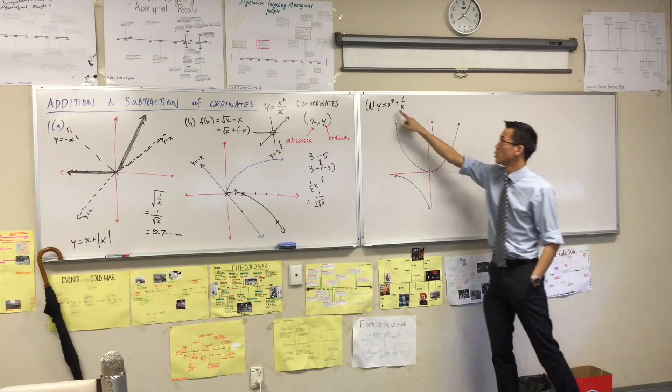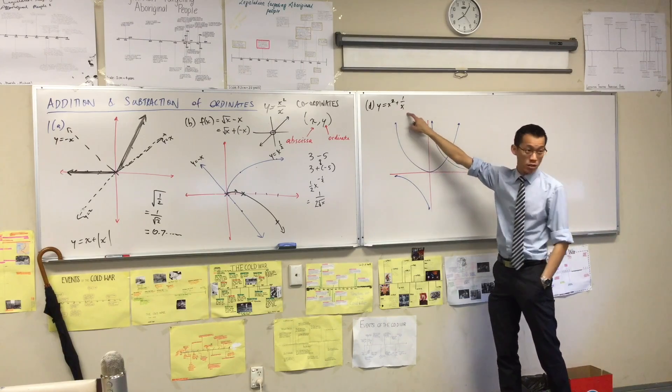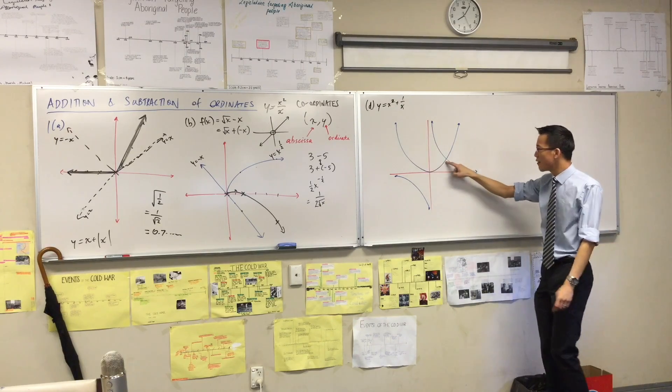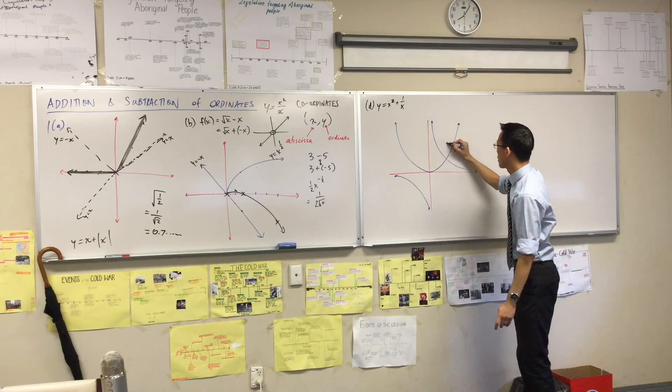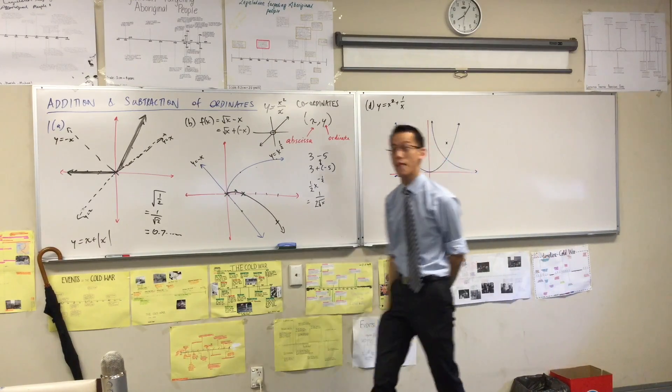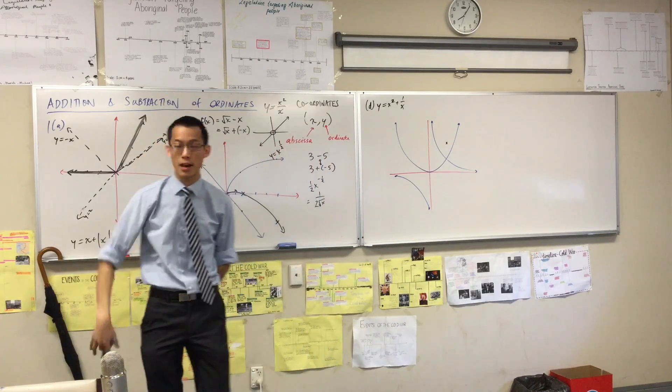Because x equals 1, well, you square it, you still get 1. You take the reciprocal, you still get 1. So therefore, at x equals 1, the whole graph is going to be y equals 2. I've added those ordinates, so it should be twice as high.